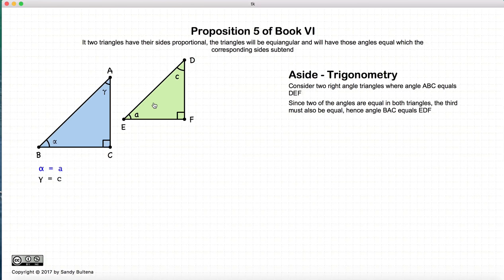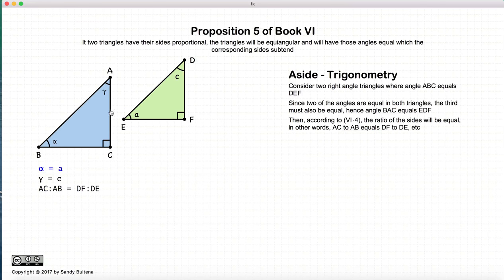So we have two triangles that are equal. And so from these propositions, we know that the ratio of AC to AB will be equal to the ratio of DF to DE. So again, let's just restate this. If alpha is equal to A, two right angle triangles, then the ratio of the opposite to the hypotenuse, opposite to the hypotenuse, will be the same for both of these triangles.